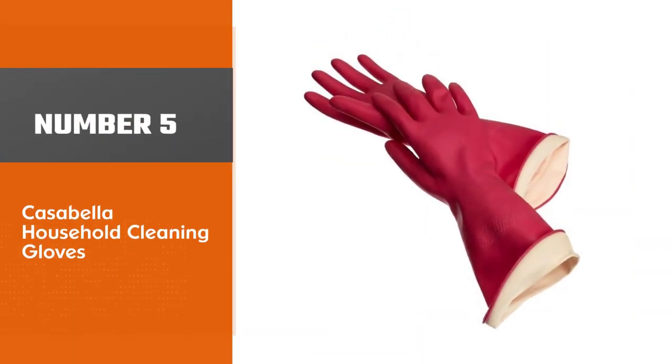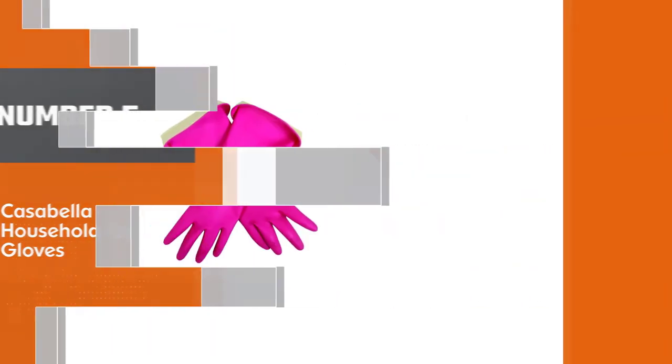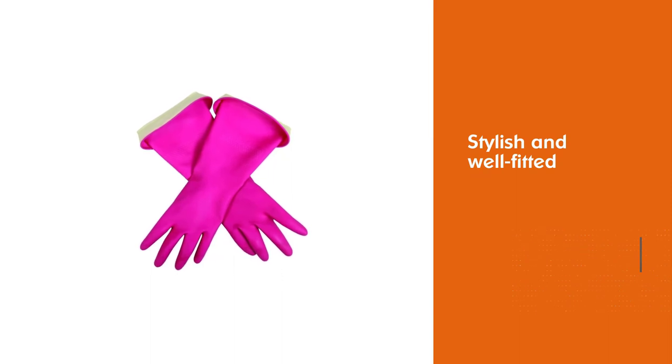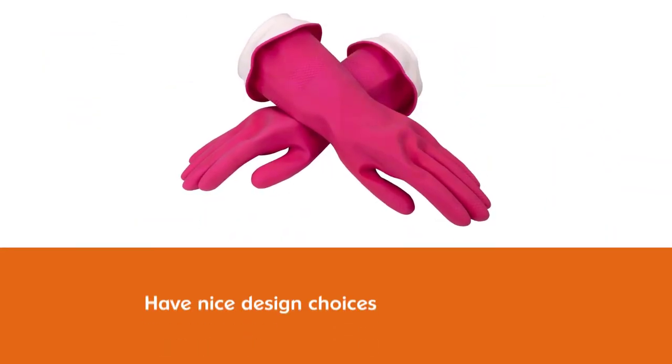Number five: Casabella Household Cleaning Gloves. The Casabella Premium Water Block are stylish and well-fitted. They have nice design choices starting with the cuff feature which keeps water from draining down the arm.